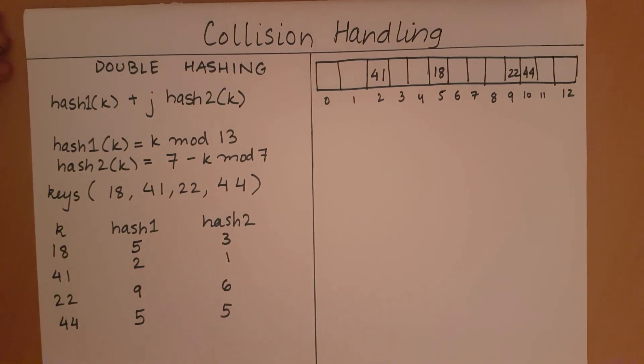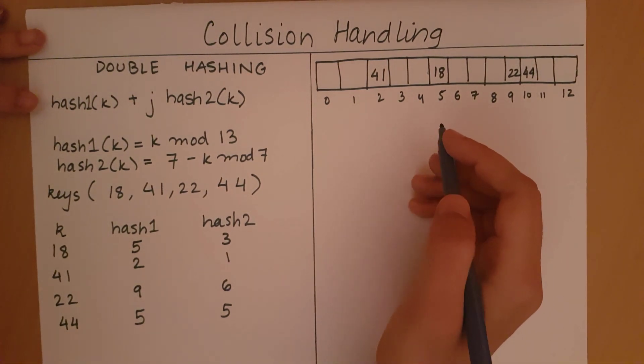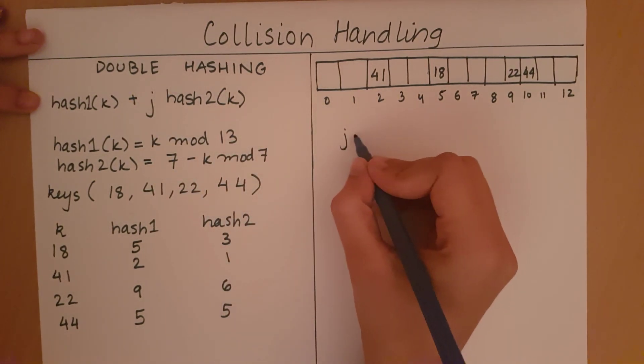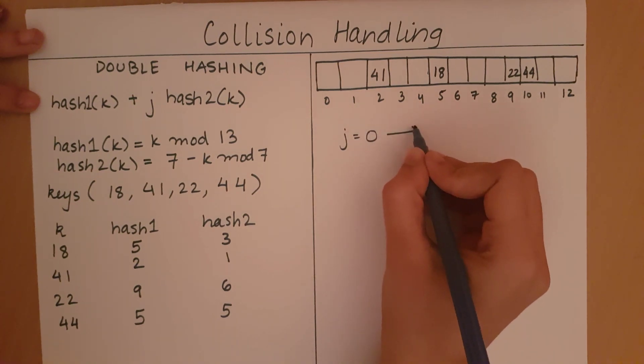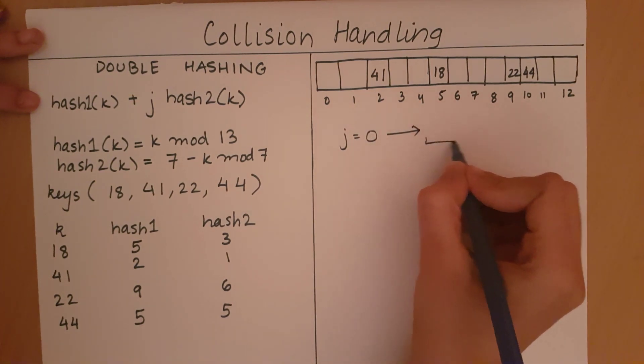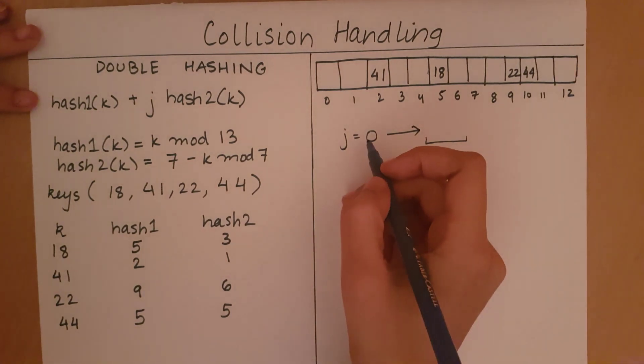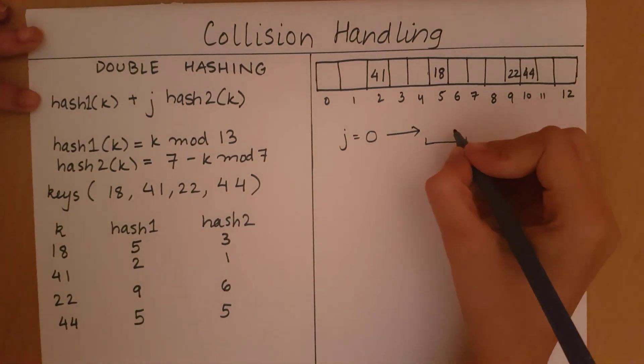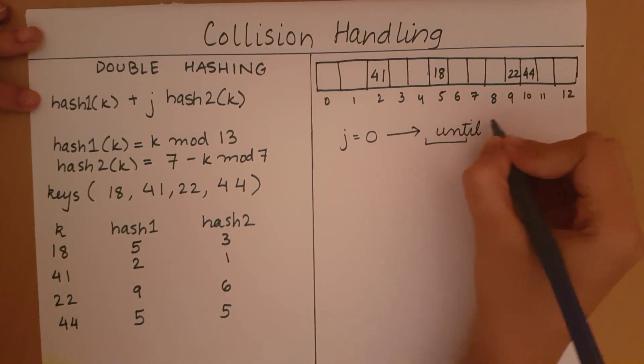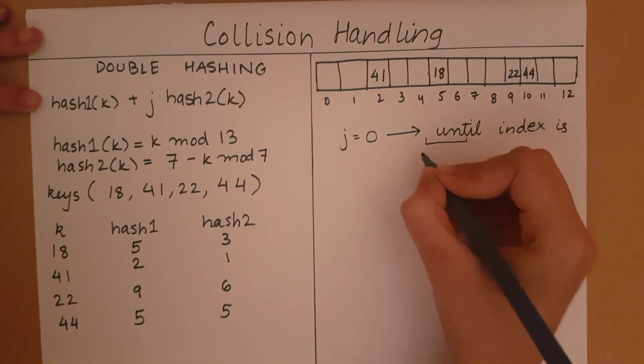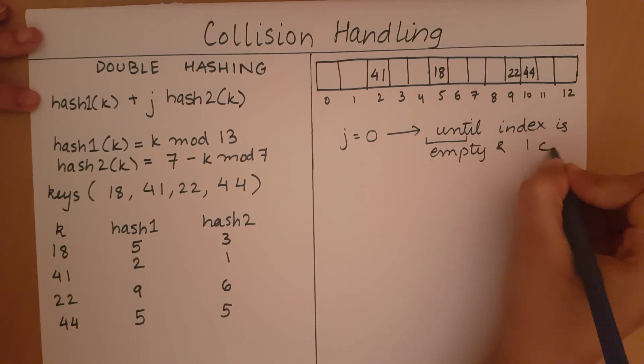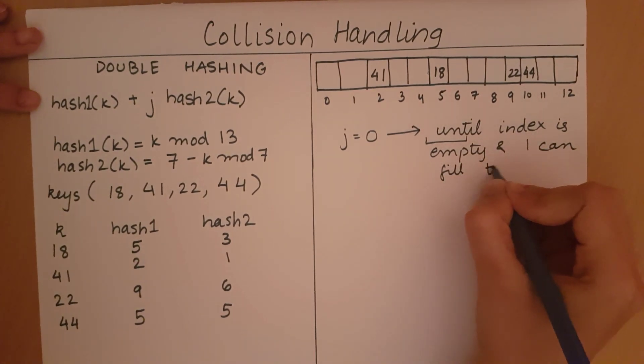In this way, we fill up the bucket array. We iteratively check hash1(k) plus j times hash2(k). j goes from 0 all the way till the required number. First it's 0 times 5, then it becomes 1 times 5. This happens until the index is empty, and I can fill that index.